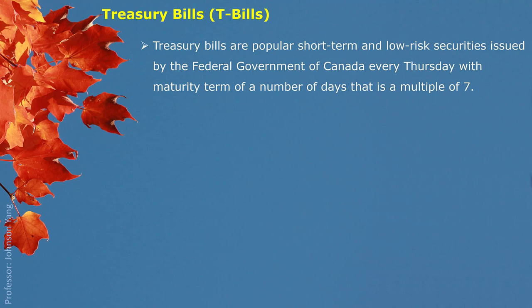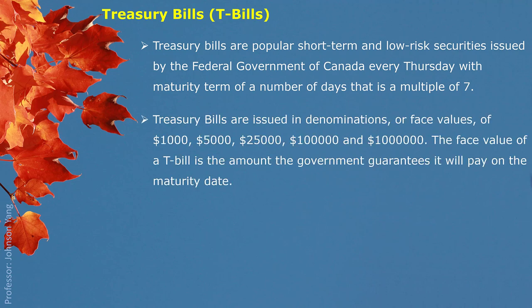That's why the days of the maturity term are a multiple of seven. Treasury Bills are issued in denominations or face values of $1,000, $5,000, $25,000, $100,000, and $1,000,000. The face value of a T-Bill is the amount that the government guarantees it will pay on the maturity date. The face value on a Treasury Bill is the mature value.